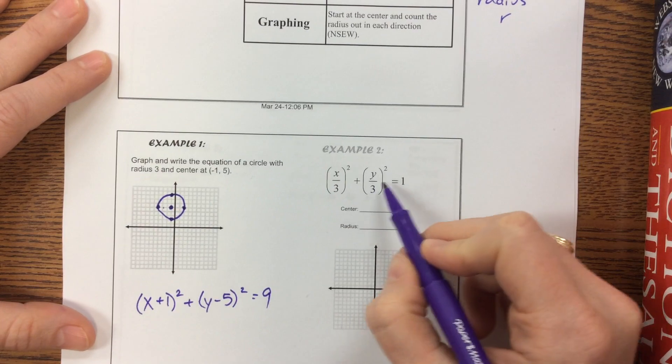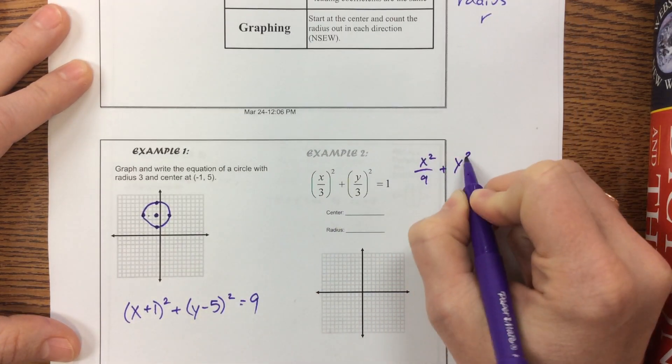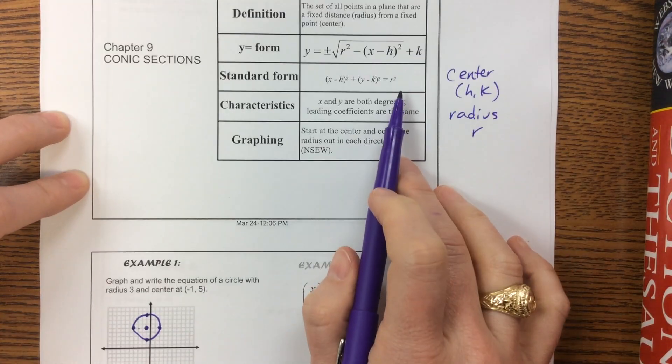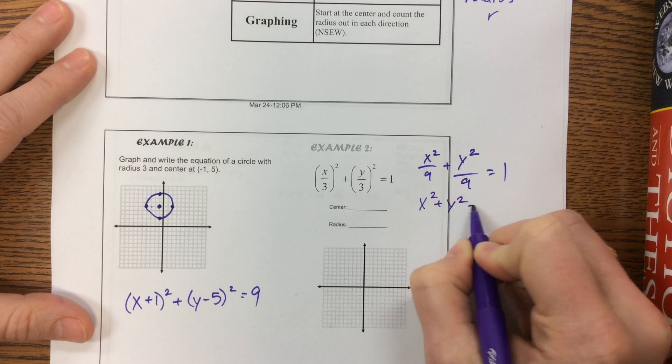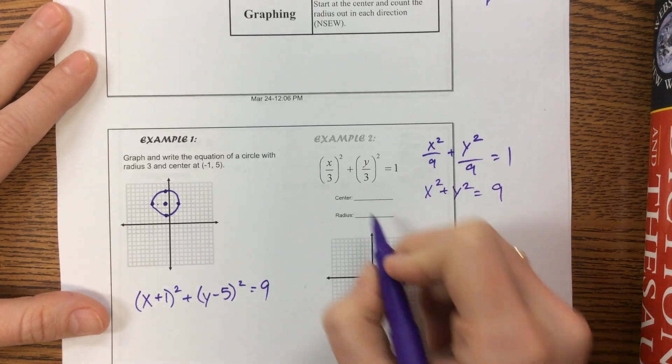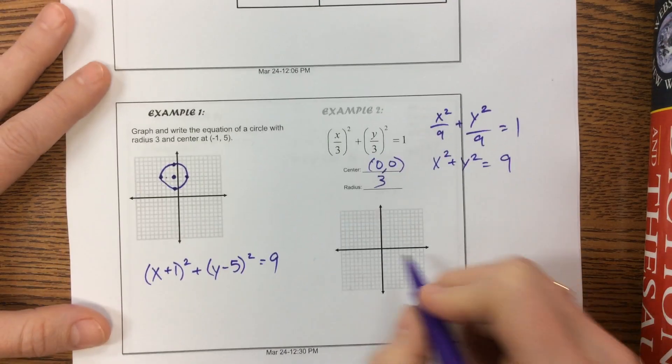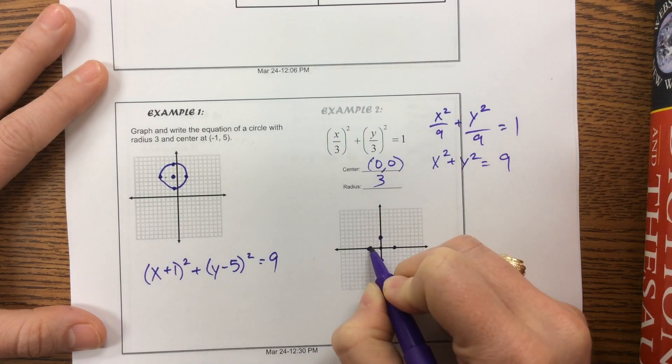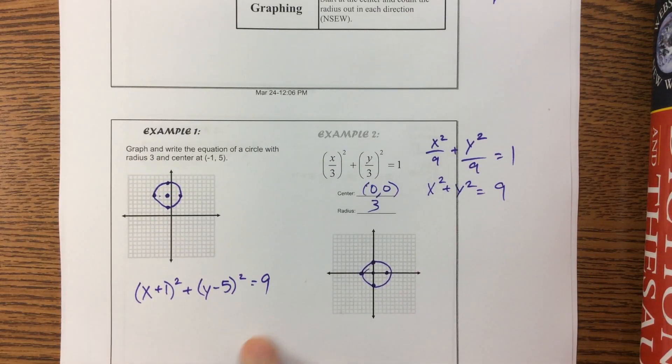On this one, we have x squared over 9 plus y squared over 9 equals 1. This isn't in the form where it equals r squared, but if I multiply everybody by 9, I get x squared plus y squared equals 9. My center is the origin and radius is 3. That's pretty straightforward.